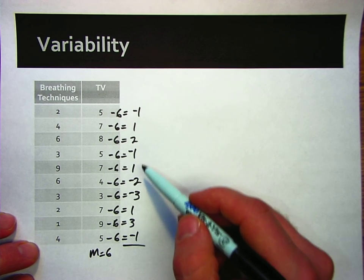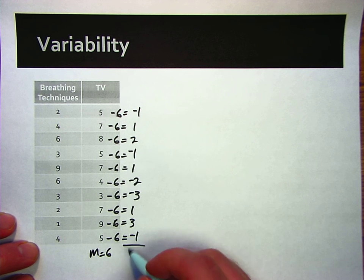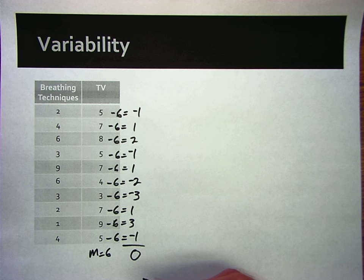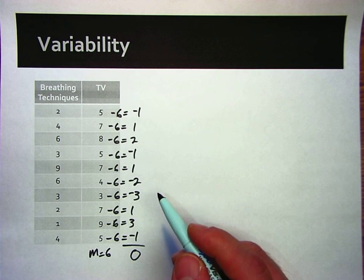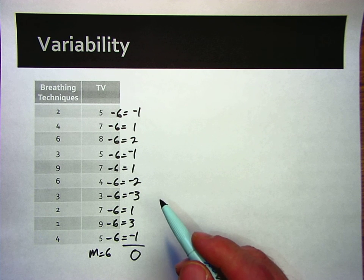If we add this up, you go through and add this up, it adds up to be 0. It always adds up to be 0, because we're subtracting the mean from it. The mean is in the middle part of the distribution for this. And so whenever we subtract the mean from these scores, it's always going to add up to be 0. 0 is not very informative to us as a measure of variability.